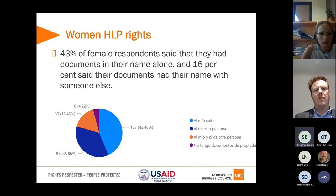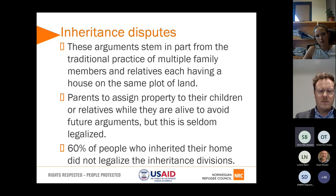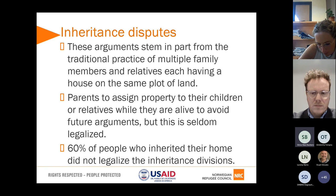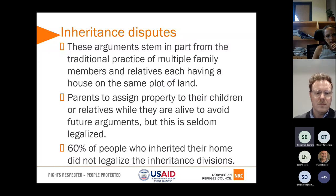In terms of women's HLP rights, it's fairly advanced: 93% of female respondents said they have documents in their own name alone, and 16% said they had documents jointly with someone else — either their husband or a brother. One of the main issues that came up beyond the lack of updating records was inheritance disputes. This comes from a tradition of several family members living on the same land with the father allocating property while still alive. Since property records are barely updated, inheritance is seldom legalized — 60% of people who inherited their homes say they had not legalized the inheritance division. This becomes an issue for family disputes and when people have to flee, as they don't have documentation to sell, let, or rent the property.